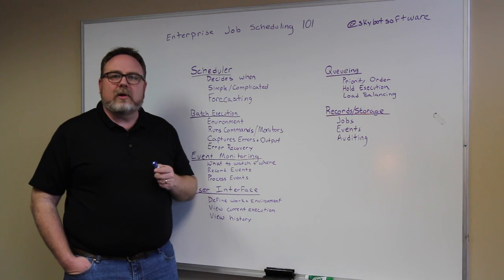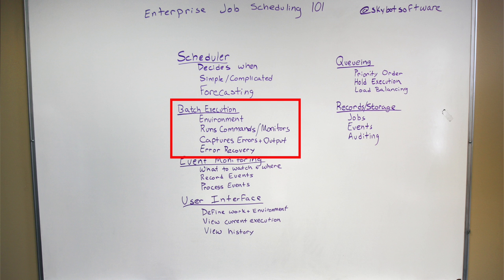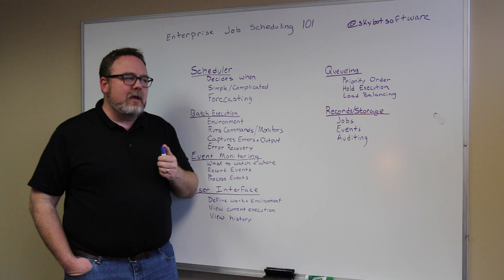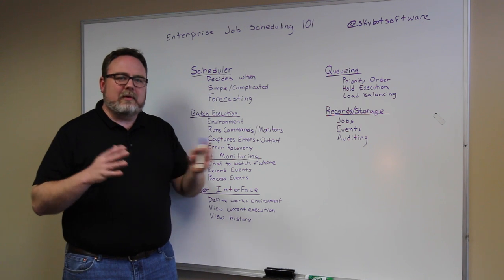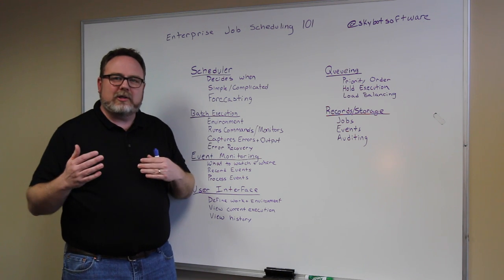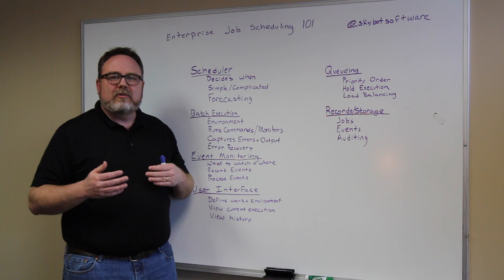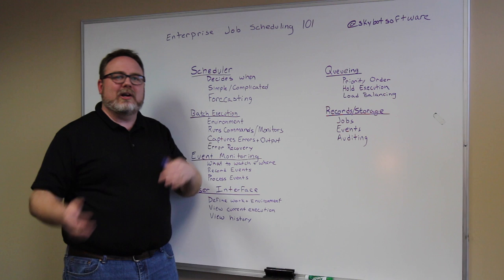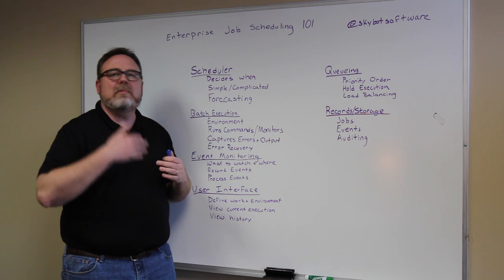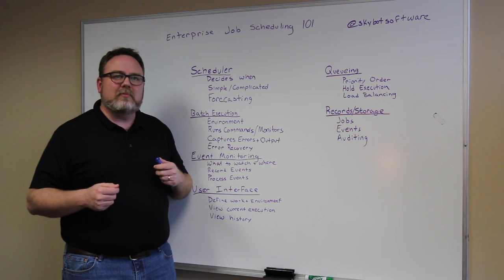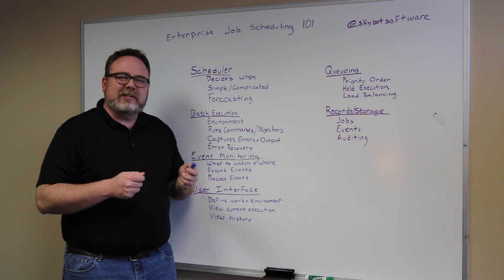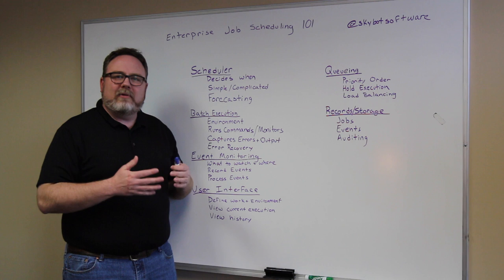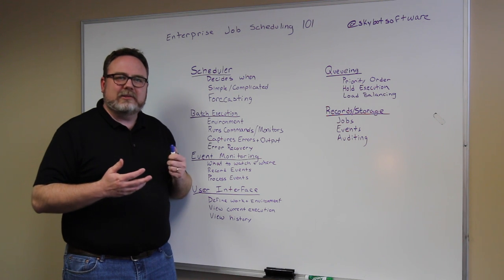The second really important part is the batch execution engine. Batch kind of comes from the days of mainframes and punch cards, where they would have several batches of punch card programs that they had to run. Batch scheduling was actually physically done by the operator taking those punch cards and loading them into the machine one at a time, running them, and then getting the output split out. Batch execution today really means running software that doesn't require human interaction.